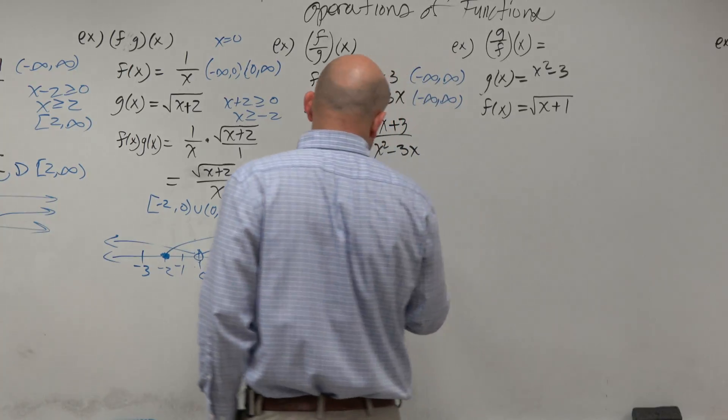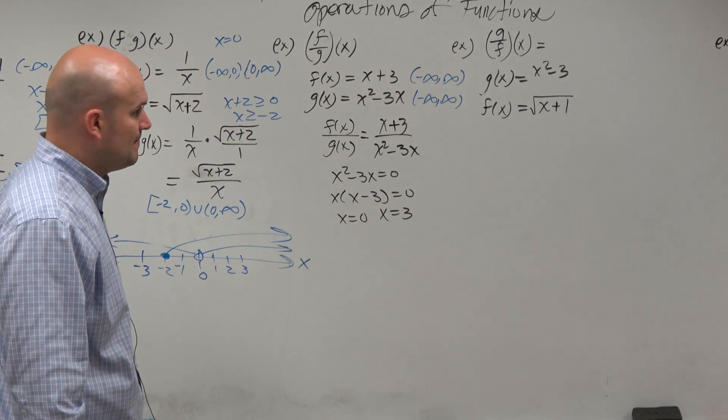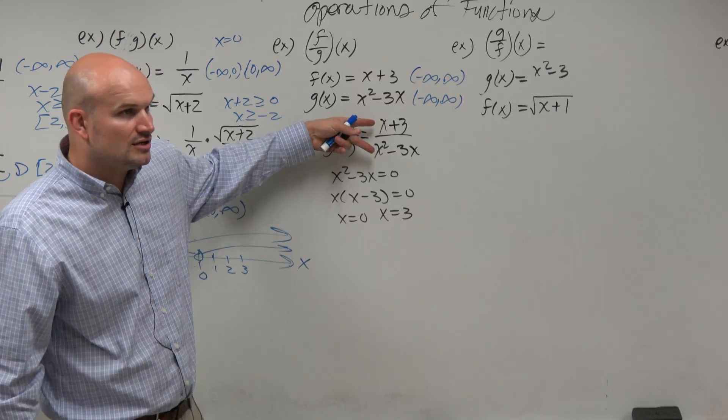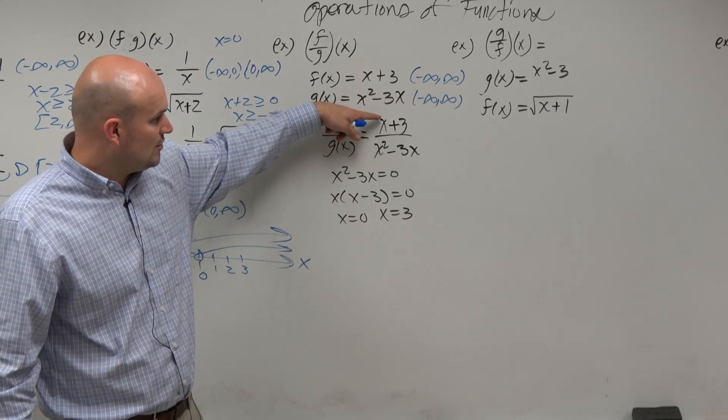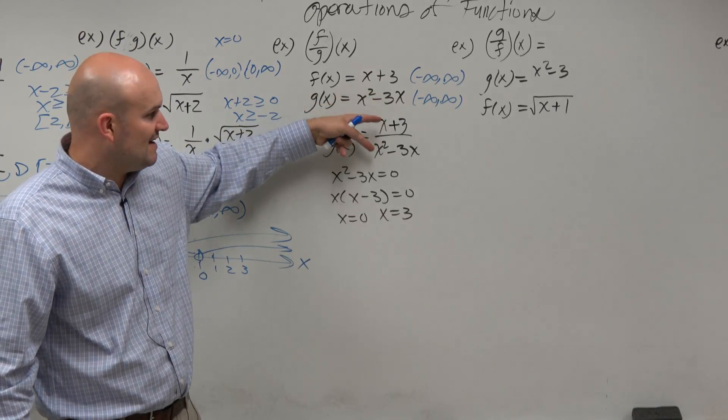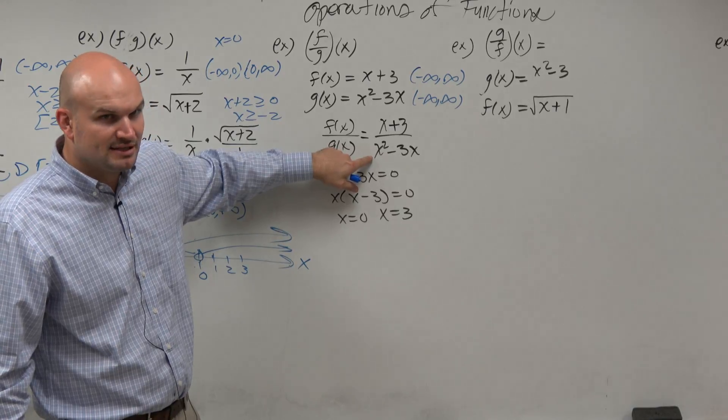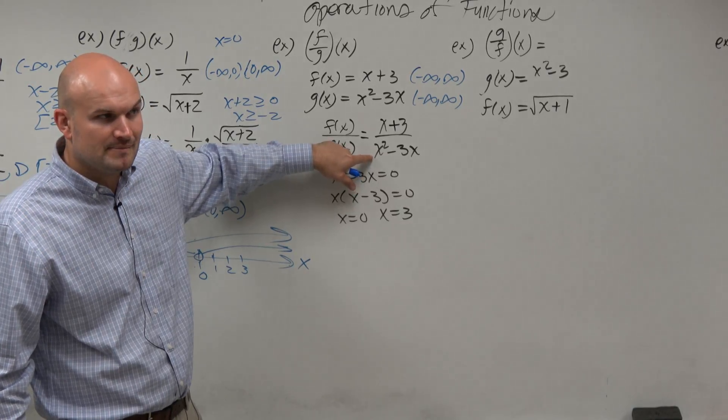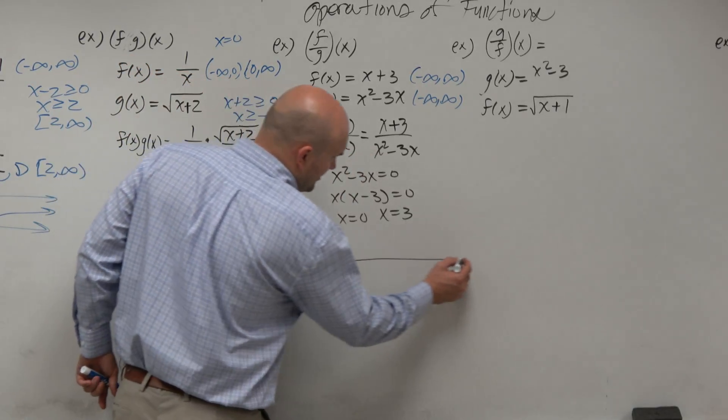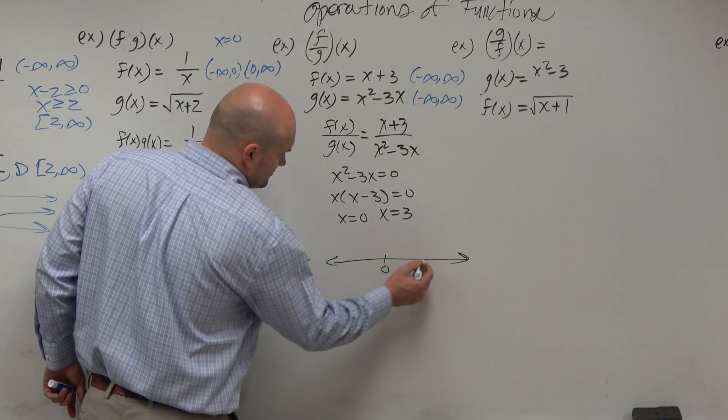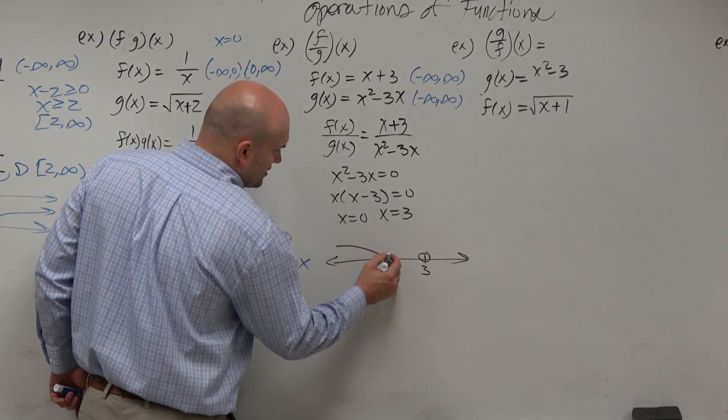So now the two values that are not in my domain are 0 and 3. Are those the only values that are not in my domain? This is all real numbers, and that was all real numbers. But when I divide them, I'm only concerned about the two values that are not in my domain. So if we're going to use the number line example again, 0 doesn't work, and 3 doesn't work.